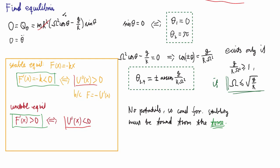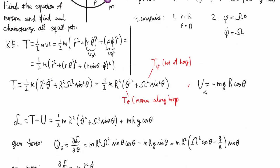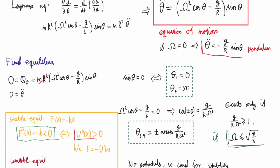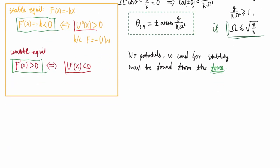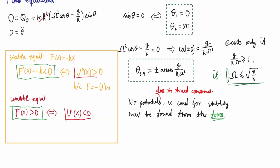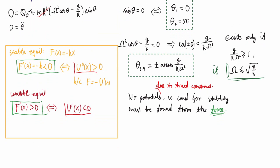The force here is now the generalized force. Note that this force does not correspond to the potential that we found earlier — taking the derivative of that potential does not give the generalized force. The reason they're not related is because we have a forced constraint. So let's now calculate what the derivative of Q, the generalized force, is.